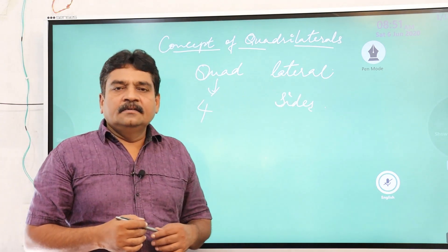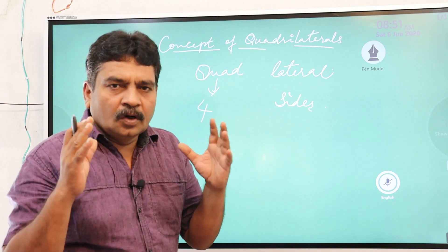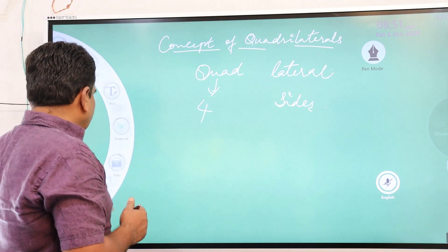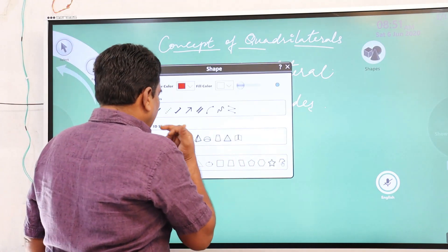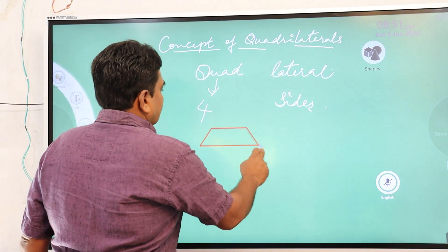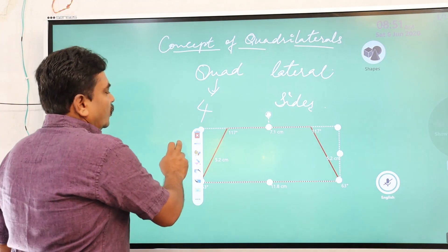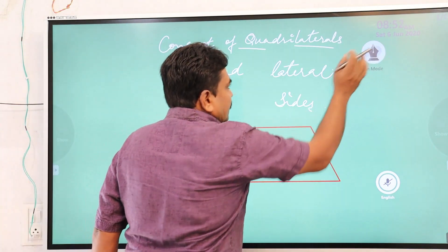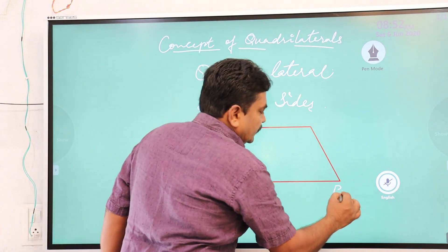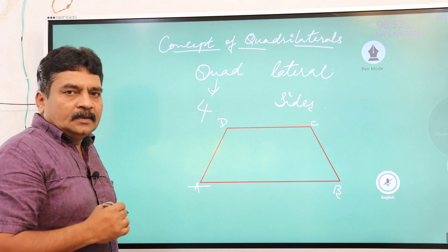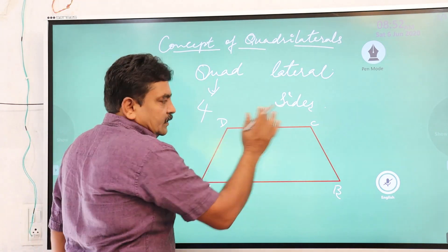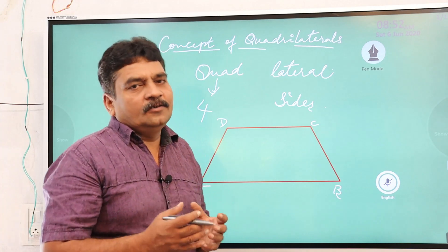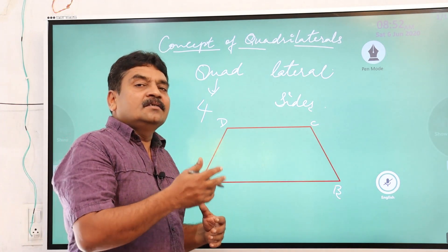Quadrilaterals means any figure which has four closed sides. I'll draw a quadrilateral to show you an example. Here is a quadrilateral with four closed sides — vertices A, B, C, and D. We'll discuss parallel sides in another session. Today I'm giving you the basic fundamental concepts so that you can build the best understanding of quadrilaterals.